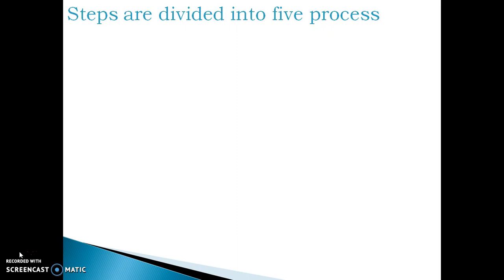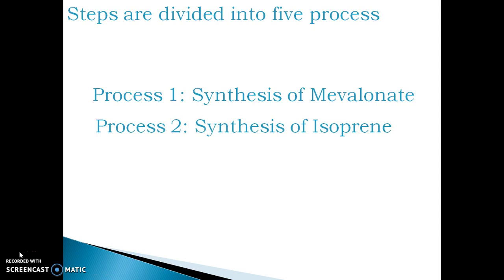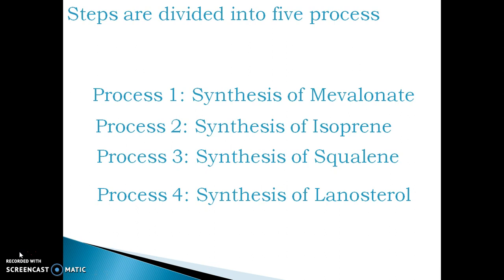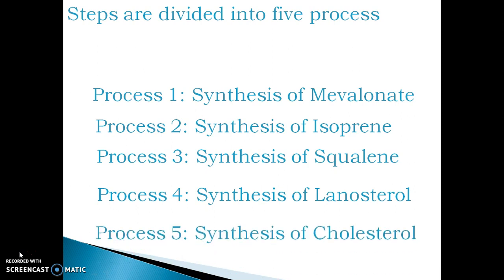The steps are divided into 5 distinct processes. Process 1 is the synthesis of mevalonate. Process 2 is the conversion of mevalonate to isoprene. Process 3 is the synthesis of squalene. Process 4 is the synthesis of lanosterol. And process 5 is the synthesis of cholesterol from lanosterol.